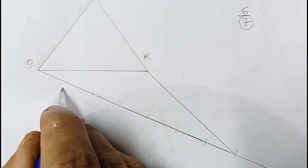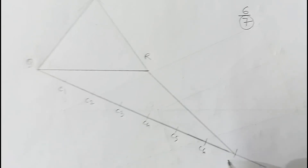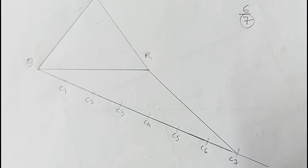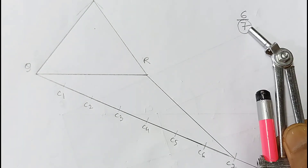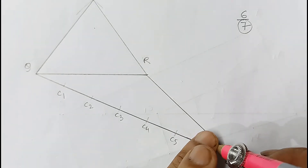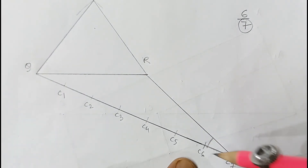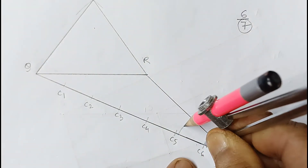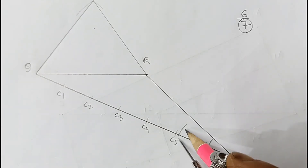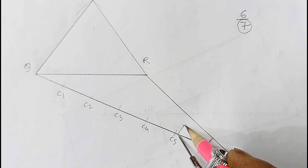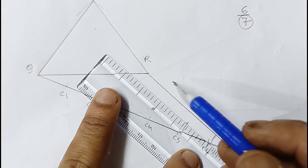Now we draw an angle at the sixth point equal to the angle at the seventh point. Draw an arc at C7, then with the same radius from C6 draw another arc. Measure the chord and cut the same distance from C6, then join those two points to get a line parallel to C7R.